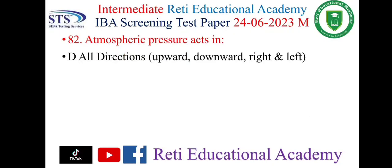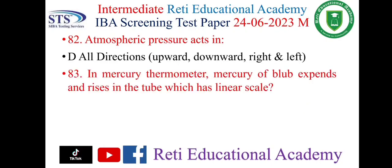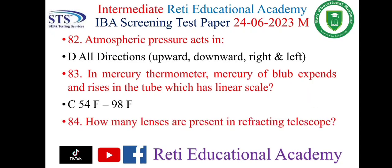Question number 82: Atmospheric pressure acts in — the correct answer is D: all directions — upward, downward, right, and left. Question number 83: In a mercury thermometer, mercury in the bulb expands and rises in the tube, which has a linear scale. The correct answer is C: 54°F to 98°F.